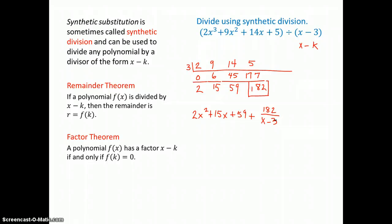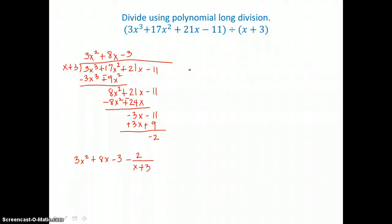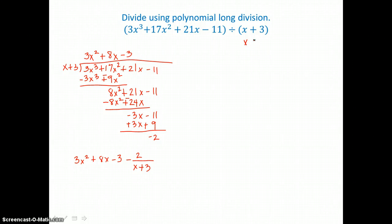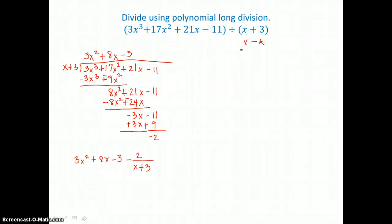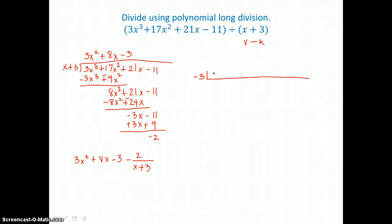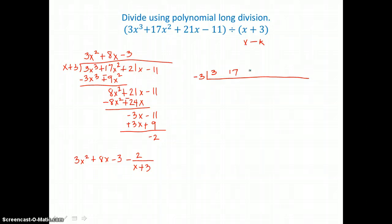Let's go back and use synthetic division on the same problem we already solved with long division. Our divisor is x minus k, so the k value subtracted from x is negative 3. We synthetically divide negative 3 through the coefficients 3, 17, 21, and negative 11.